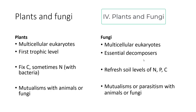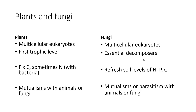Both plants and fungi are traditionally included in the study of botany, but there are several differences to note. Both are multicellular eukaryotes with mitochondria, although plants also have chloroplasts. Plants are the first trophic level and are essentially primary producers, while fungi as saprobic organisms are essential decomposers in the environment.